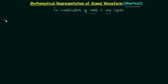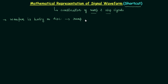I will write down the condition in which you will only have the ramp signal in your representation. When the waveform has no discontinuities, it can be represented using only ramp signals.